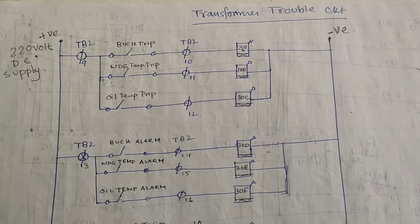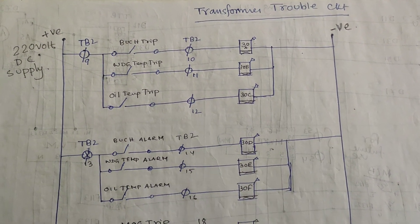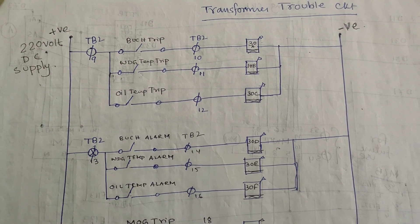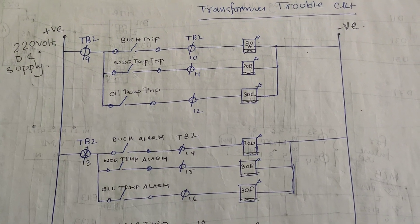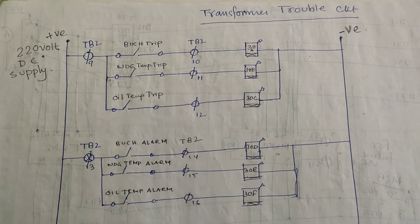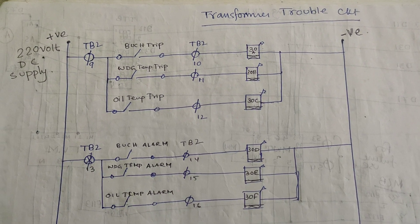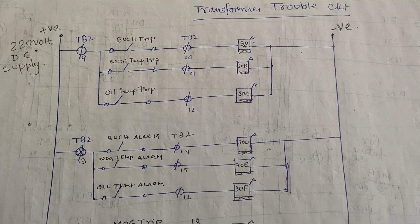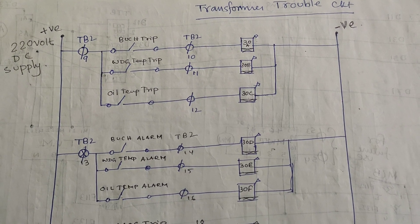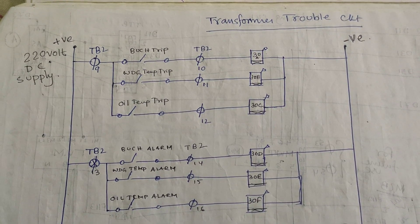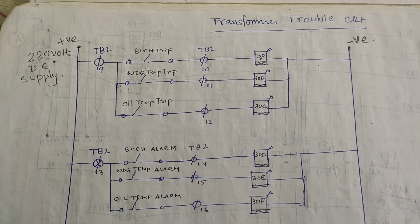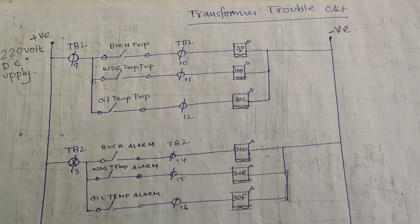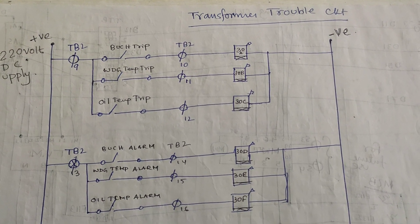In substations or grid substations, different power transformers, different ICTs, and different types of auto-transformers are installed as per connected load and requirement. We generally use 31.5 MVA, 50 MVA, 80 MVA, 160 MVA, 200 MVA, 315 MVA, and 500 MVA transformers, including 500 MVA ICTs.